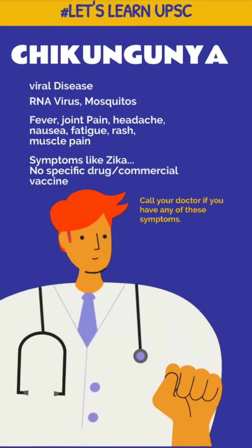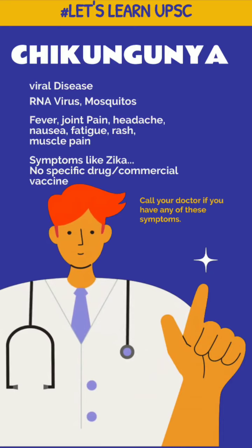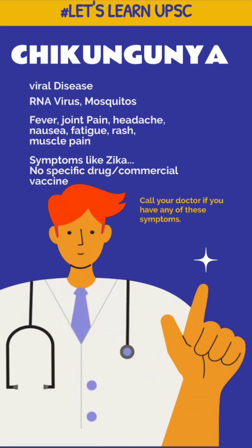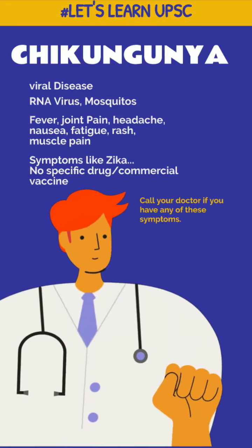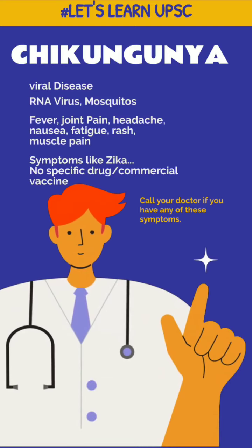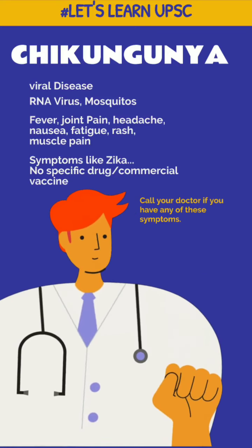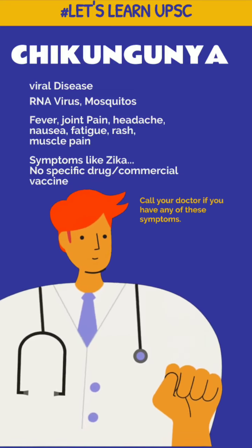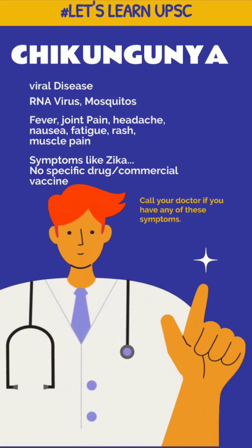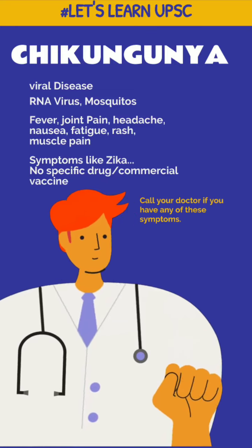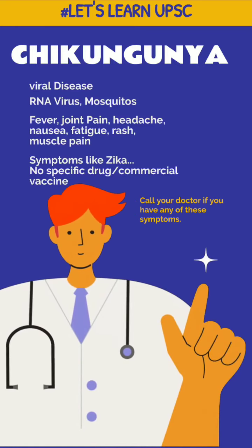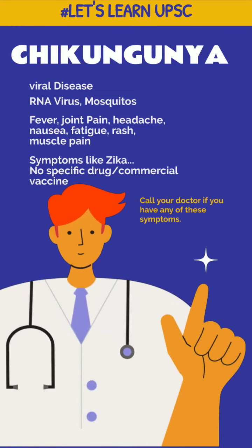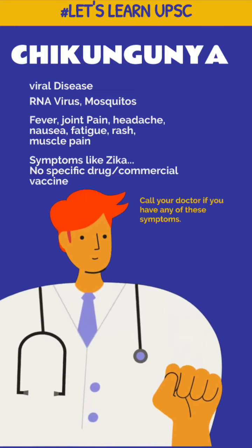Chikungunya is a mosquito-borne viral disease — we have to know this, it is a viral disease. UPSC might put something else in place of 'viral,' so we have to be careful. One more important point: it is an RNA virus. The signs and symptoms of Chikungunya include fever, joint pain, muscle pain, headache, nausea, fatigue, and rash — basically the common symptoms we would write for most diseases while studying in school.